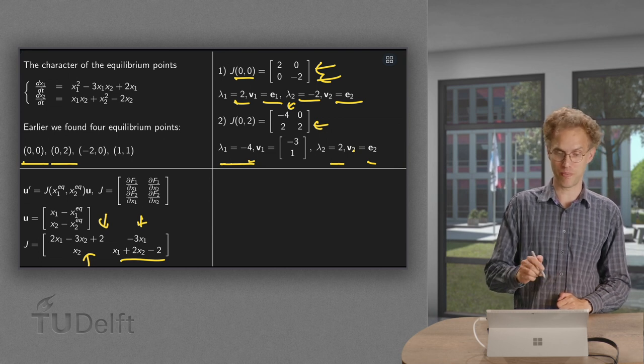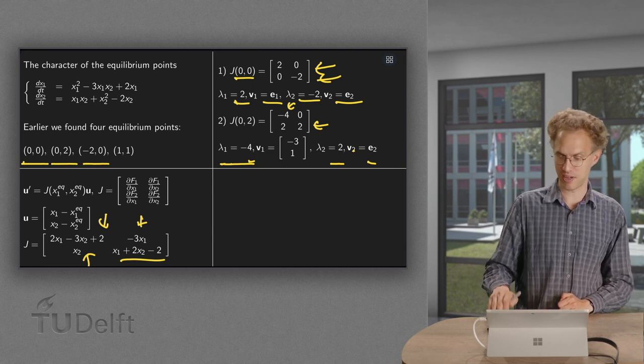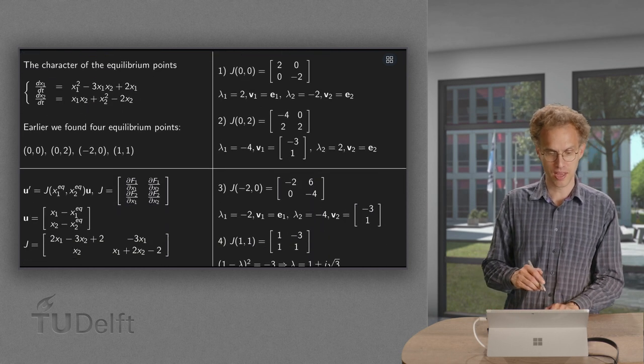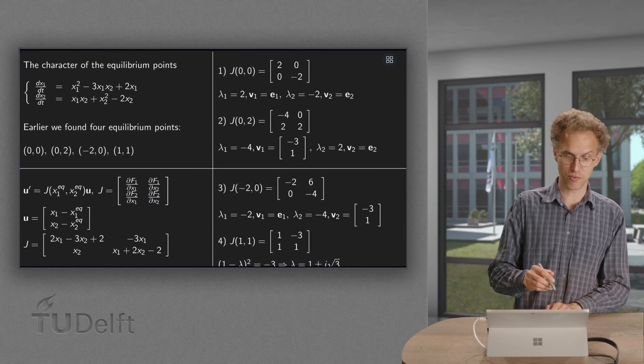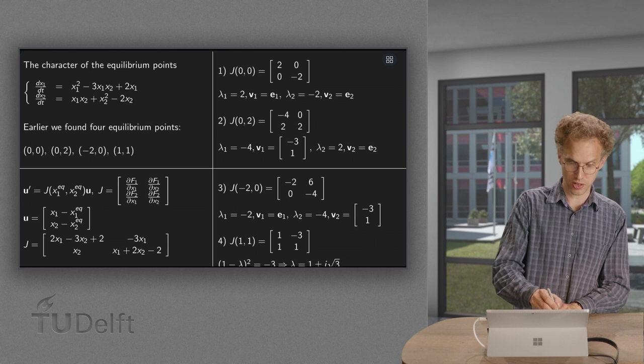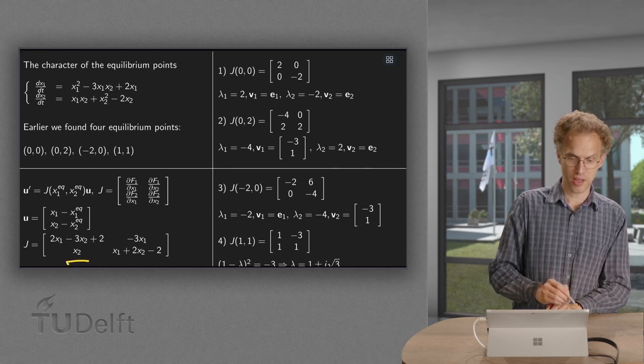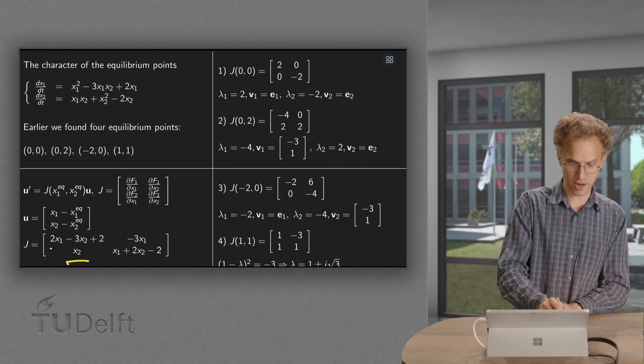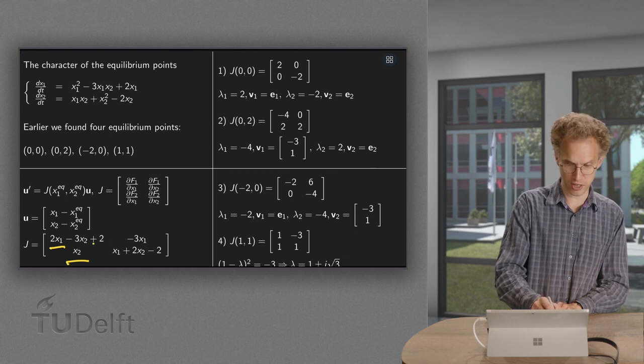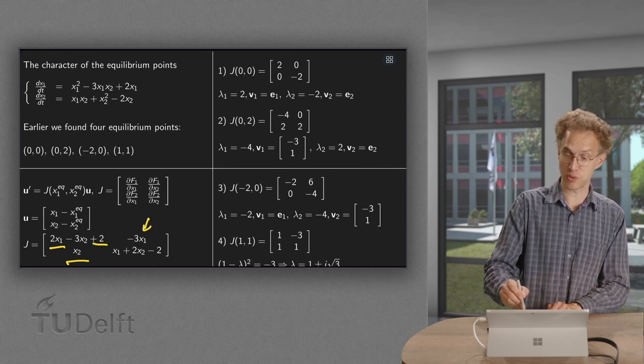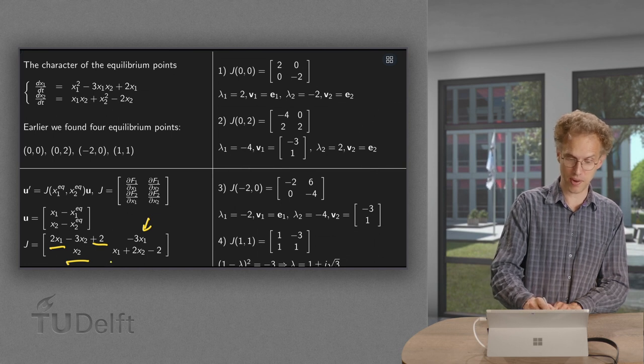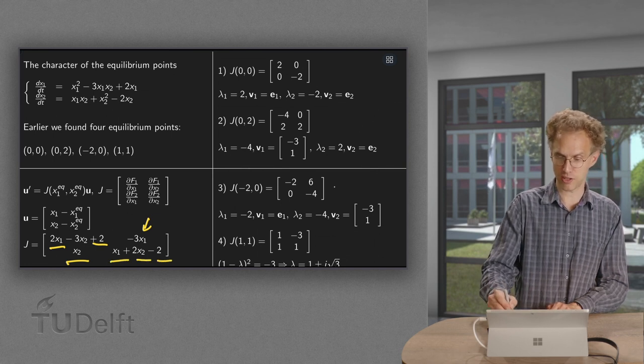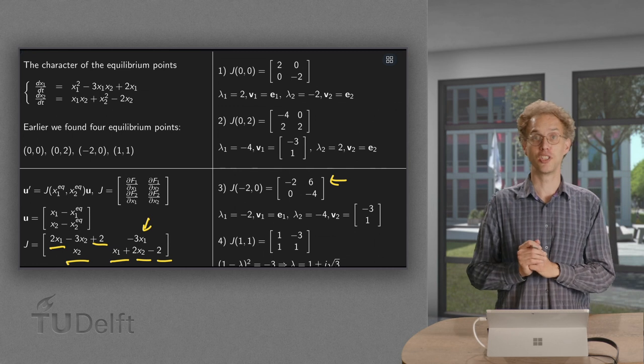Two more to go. (-2,0), the next equilibrium point. What do we get now? Now we have to plug in -2 for x1 and 0 for x2. So we have a 0 over here. We get here a -4 plus 2 equals -2. You get here -3 times -2 equals 6. Here -2 plus 0 minus 2 equals -4. So there we have our Jacobi matrix.